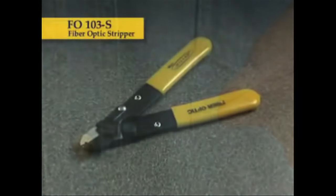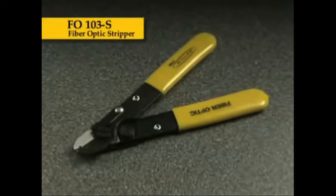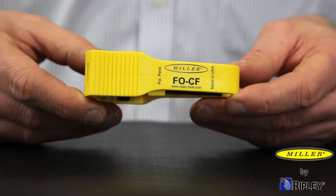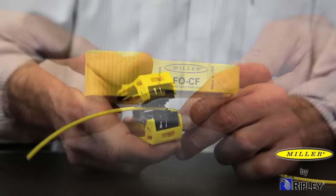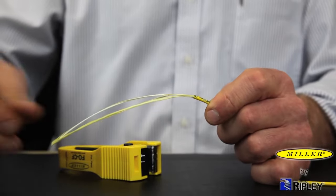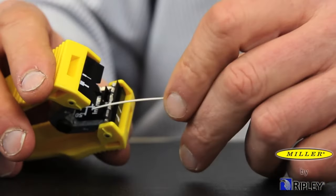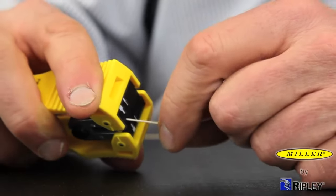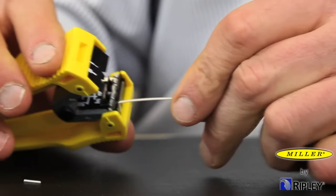For buffer removal, Ripley also offers dual and tri-hole strippers. When working with suplex plenum cable, try our FOCF. The Miller FOCF fiber optic stripper with center feed design allows for longitudinal approach fiber stripping while being compact, lightweight, and ergonomic.